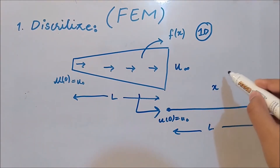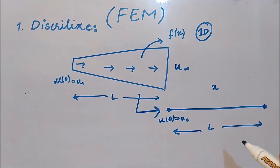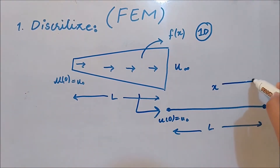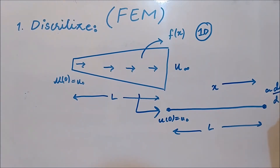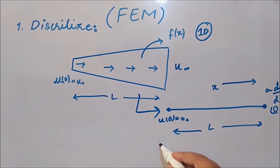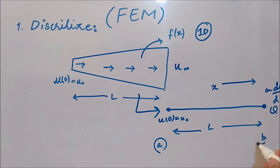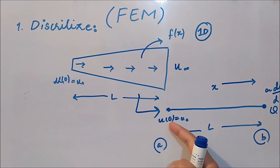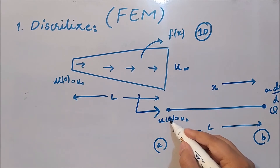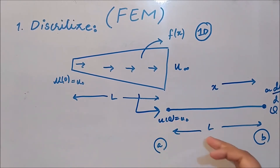Because we are dealing with x and working in one dimension, this is the x-axis. At one end we have a rate of change of displacement equal to some value q-naught. This is the domain, starting from a and ending at b, so our domain is from a to b. More precisely, u at a is equal to u-naught, and this is the mathematical idealization of the fin problem.